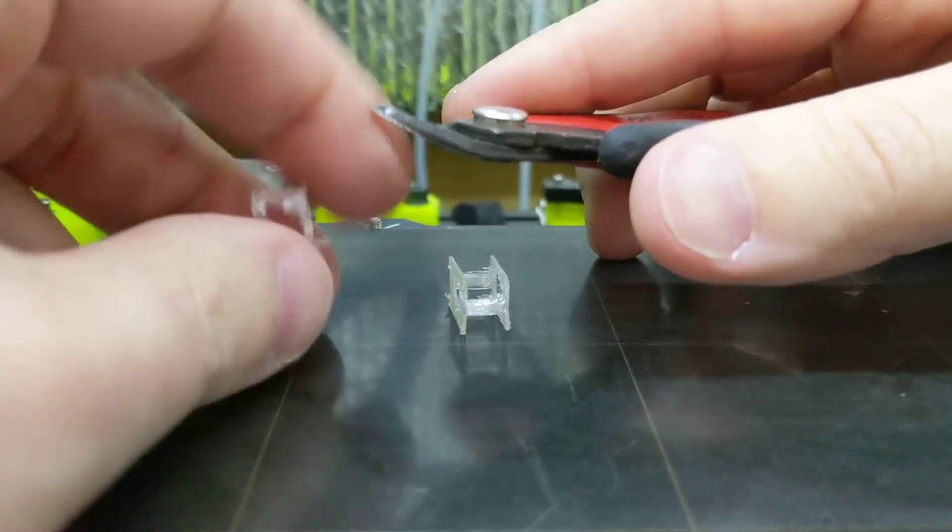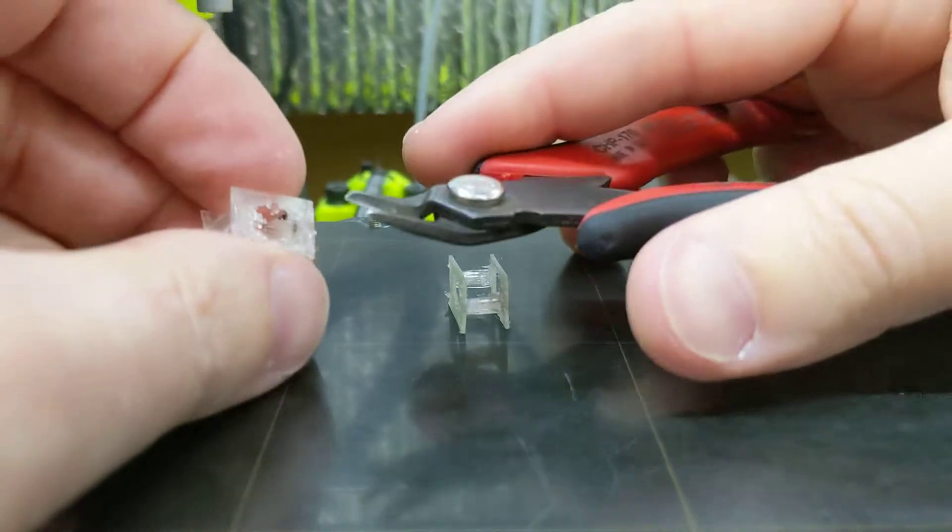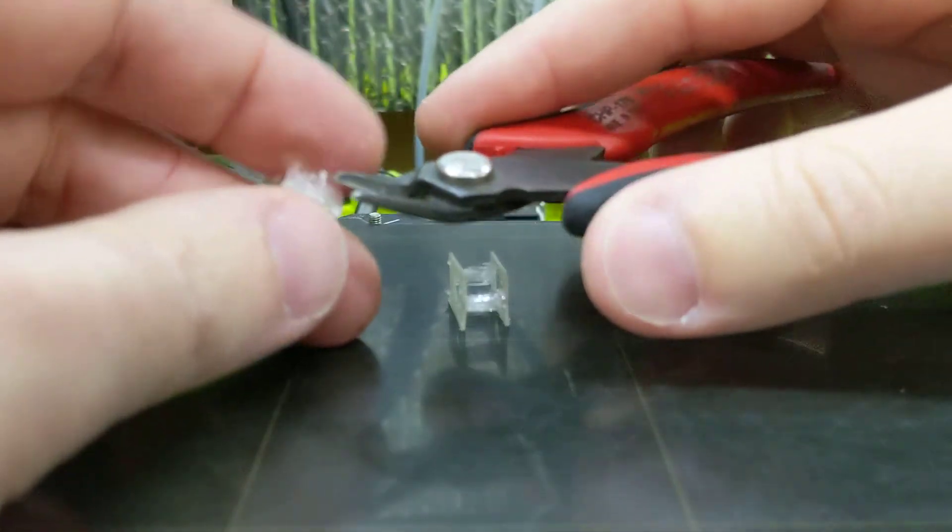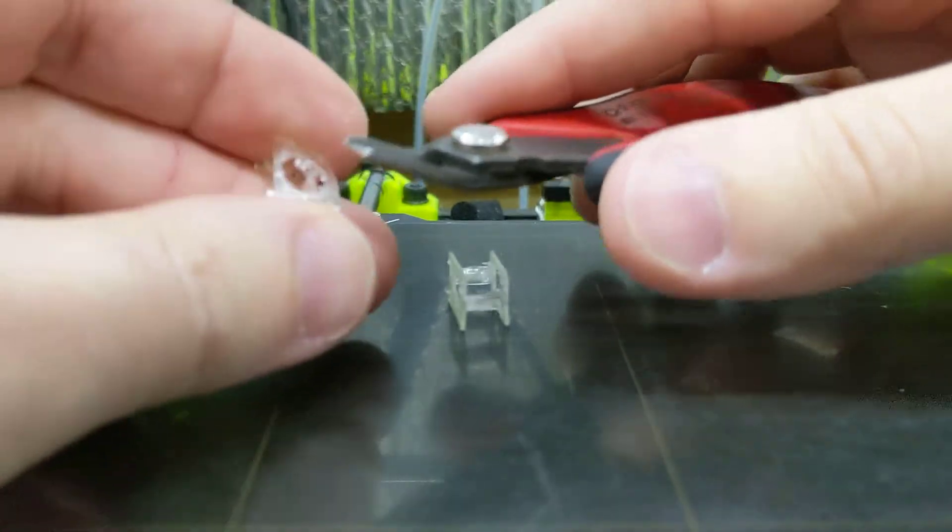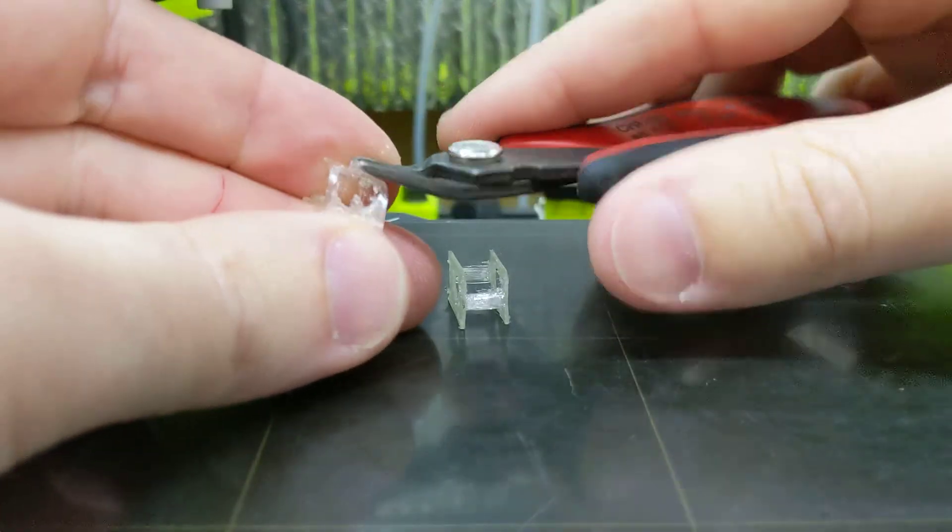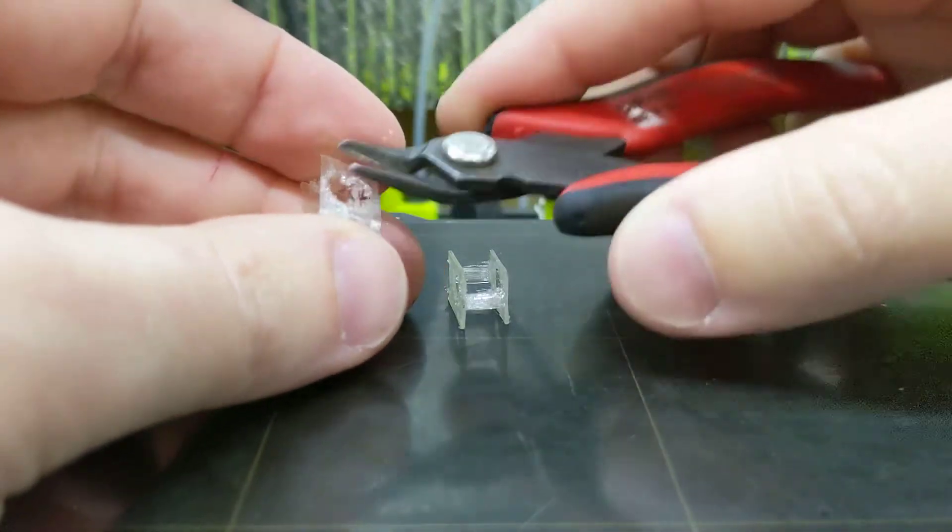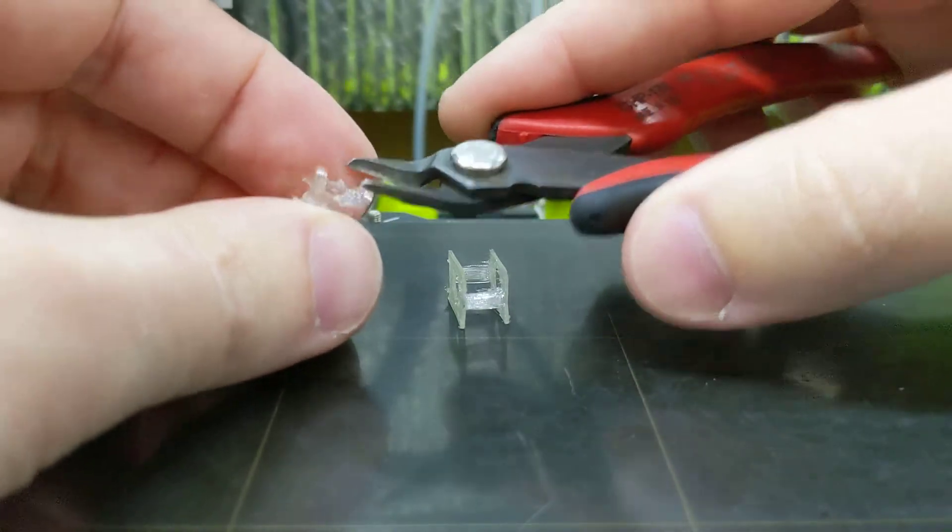So when you first print the spring, it can be kind of a mess like this because with NinjaFlex you can't really have much retraction. So it leaves these strings. You see that? These little bits coming off. And those can really mess with your switch, so you want to get rid of those.